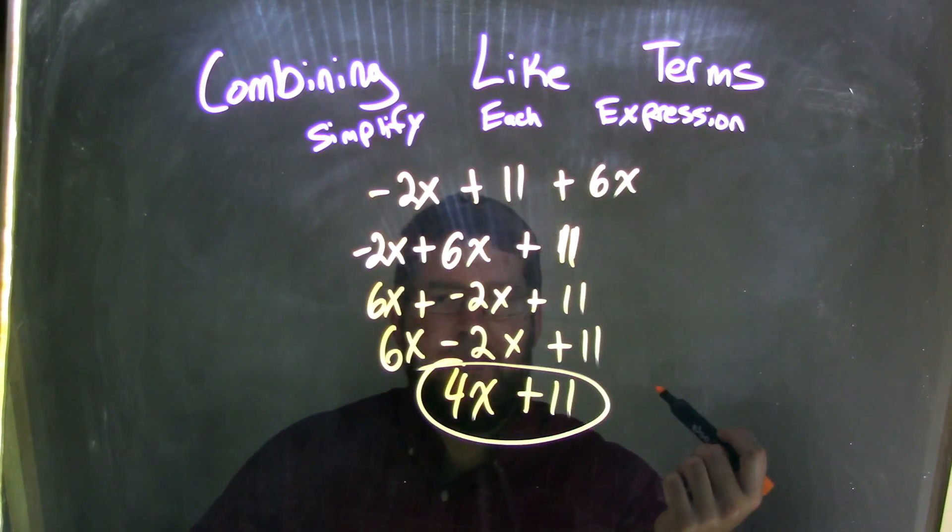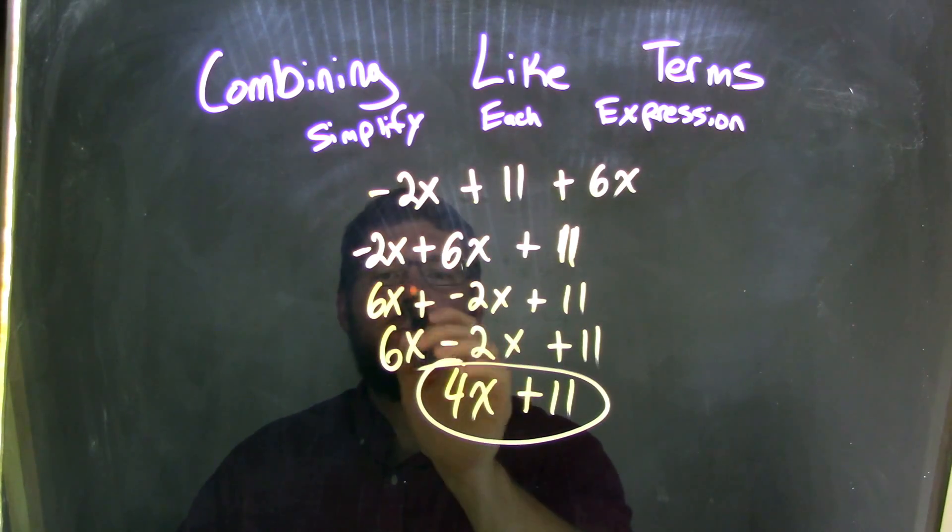But, if you can't, it's okay. We need to rearrange again, using the commutative property, to write 6x plus a negative 2x.